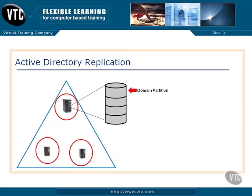The first partition is the domain partition — you'll also hear this called the domain naming context. This contains all the objects in the domain: all your users, groups, computers, group policy containers, and so forth. The domain partition is automatically replicated to all the other domain controllers in the domain.